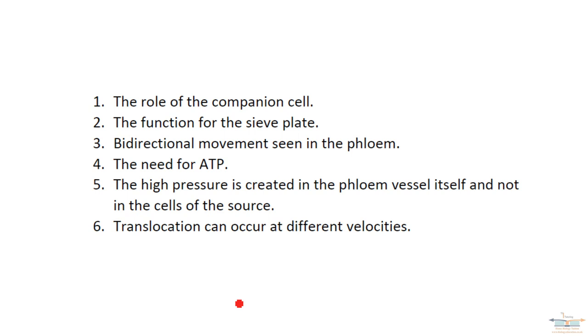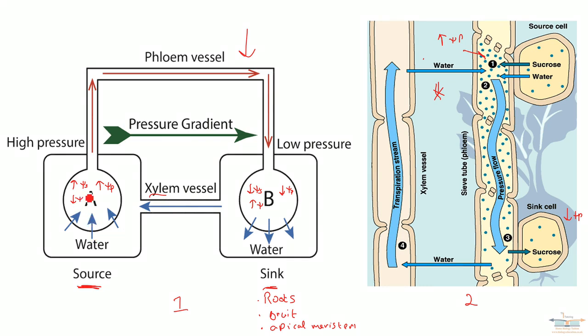Number five, this is what I was mentioning earlier about diagram two. With the mass flow hypothesis, if I go back to diagram number one, the pressure is said to get generated within the cells of the source. But in reality, what we now know is the pressure itself is created in the phloem vessel. And that's what this diagram two is on the cusp of showing. So we'll come to how the pressure is created in the phloem in the next video.